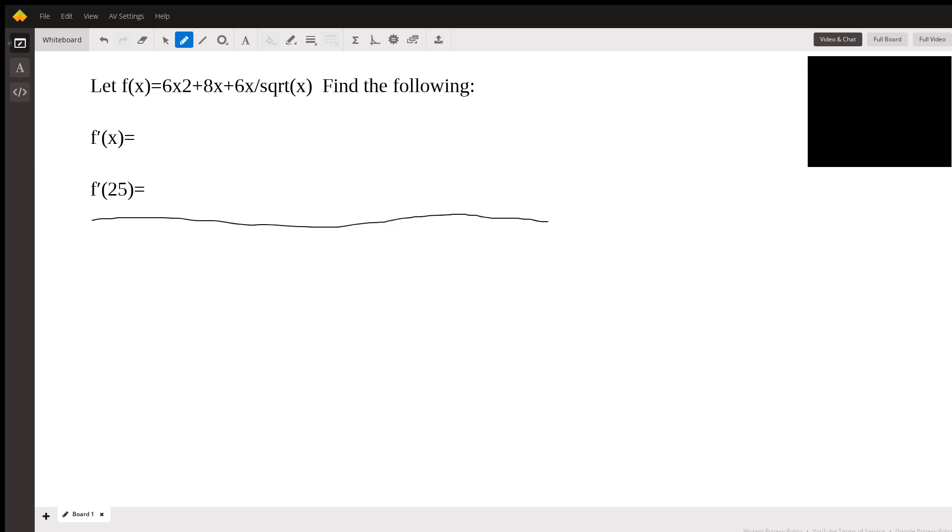We're just going to use power rule pretty much throughout this problem. We could use the quotient rule if you want to. It doesn't really matter. Let me just copy this out. f(x) equals 6x squared plus 8x plus 6x over square root of x.